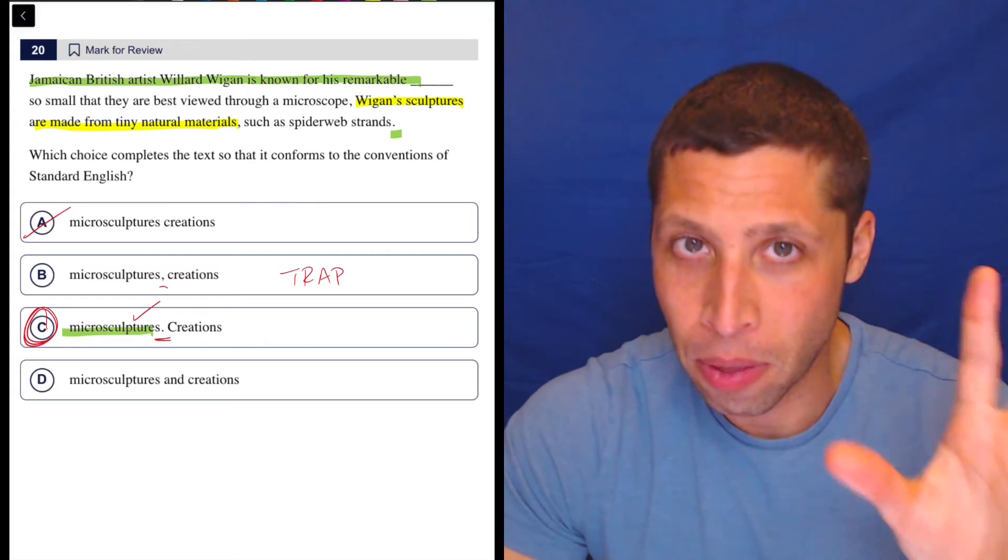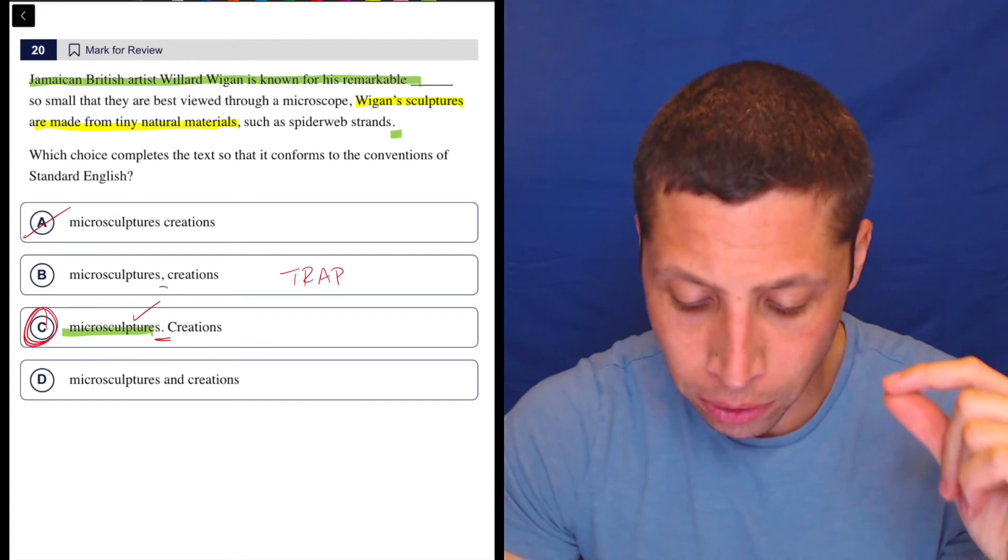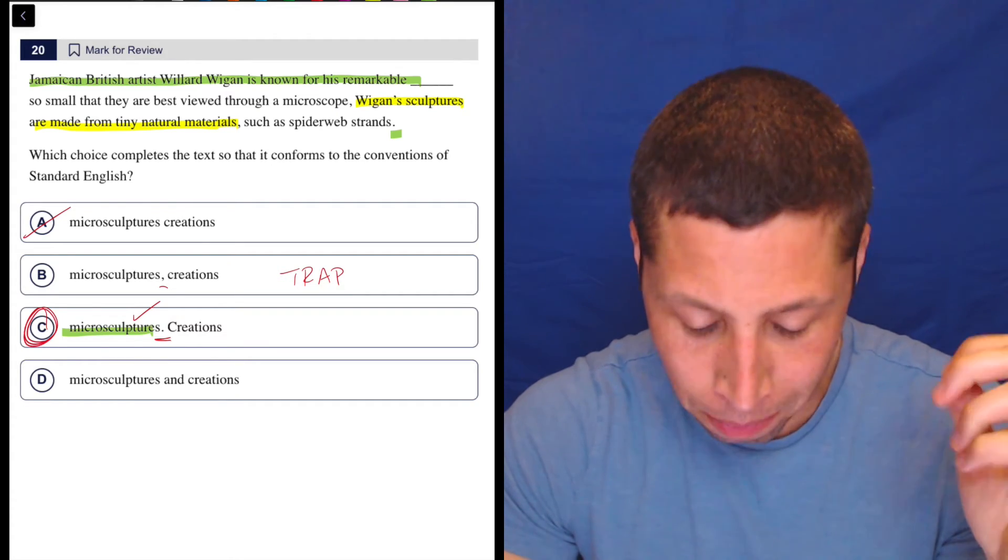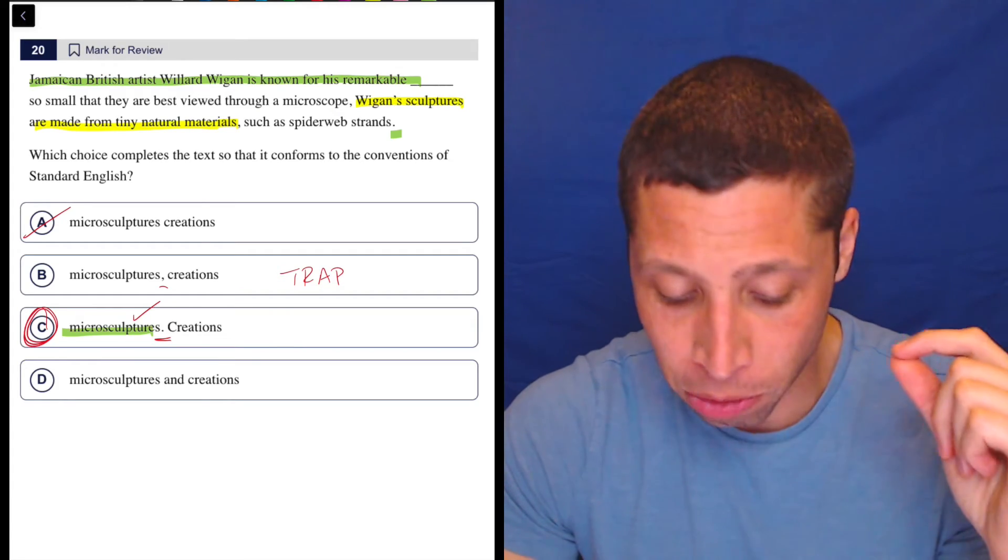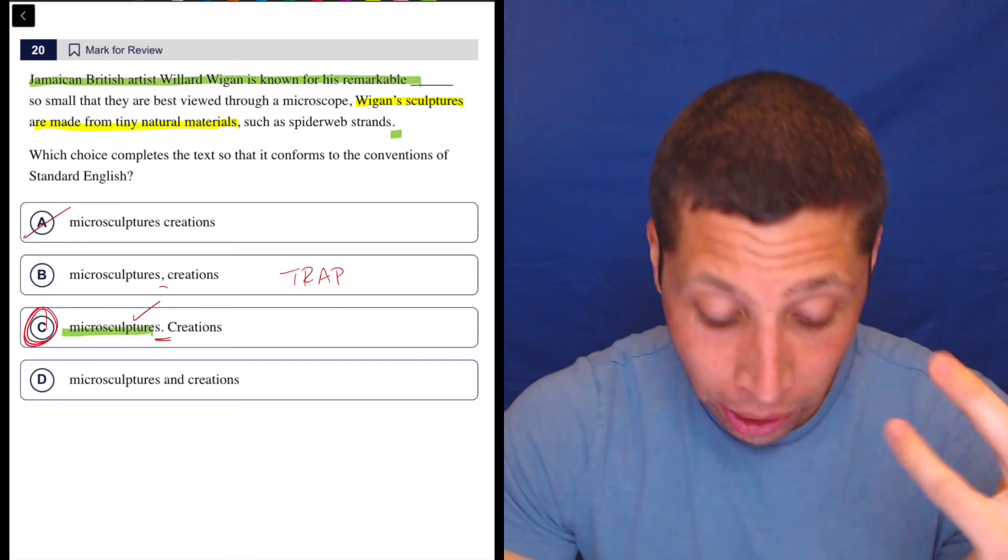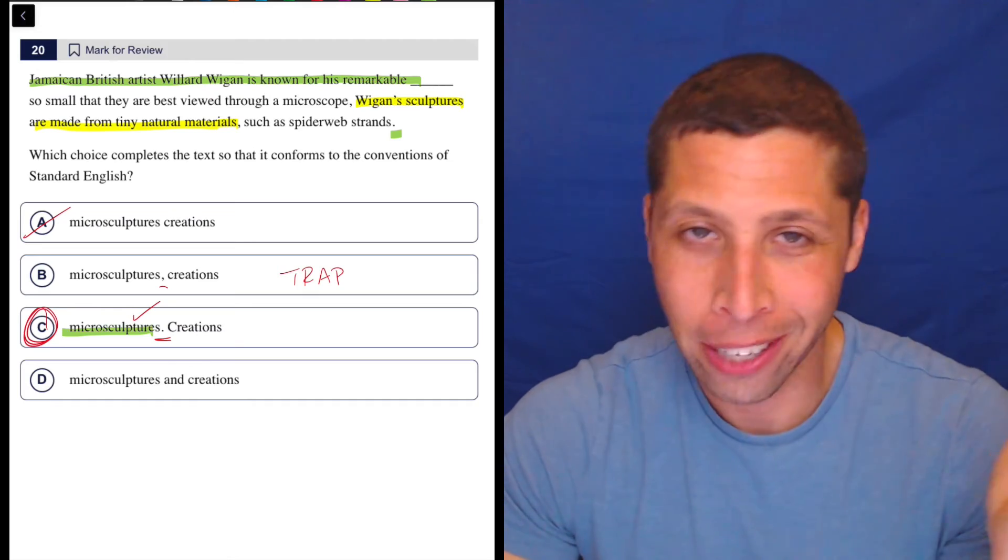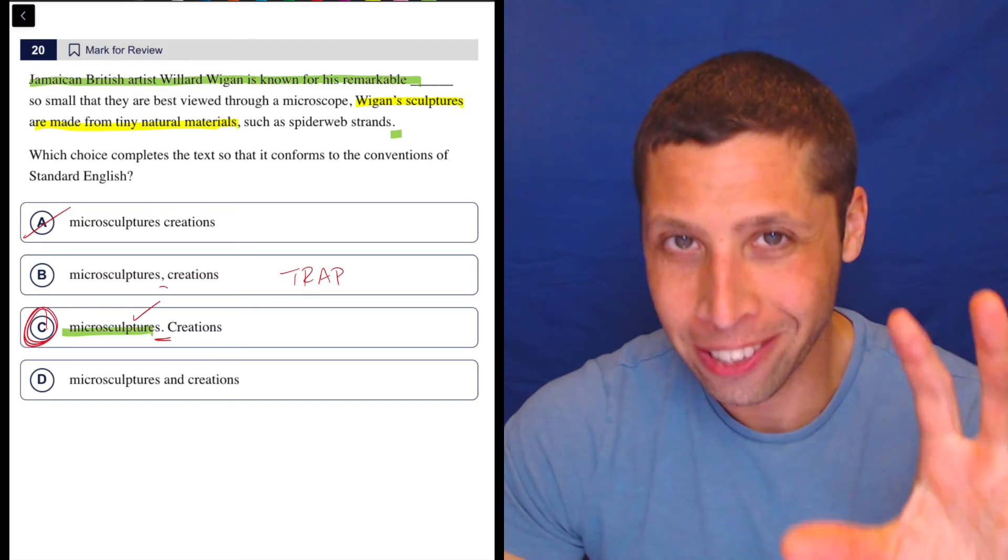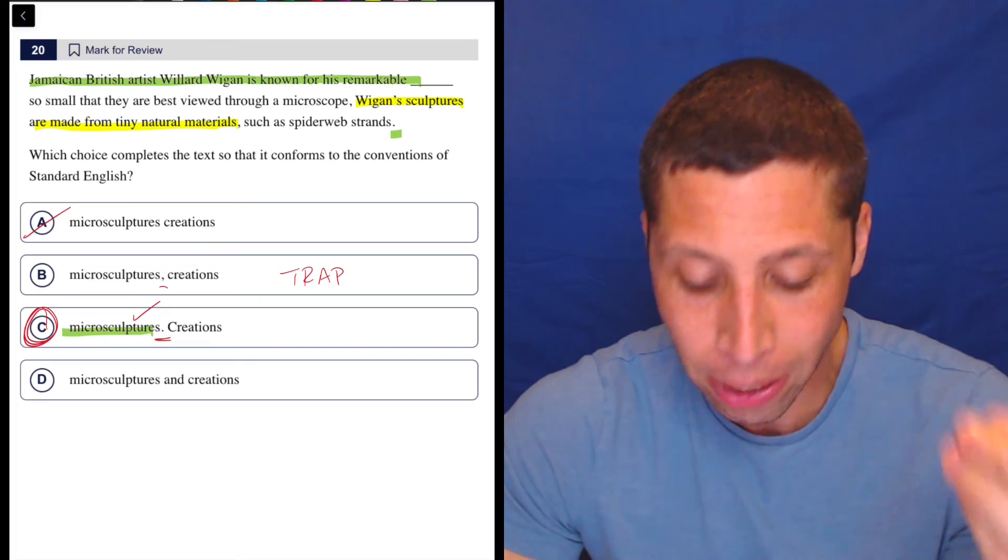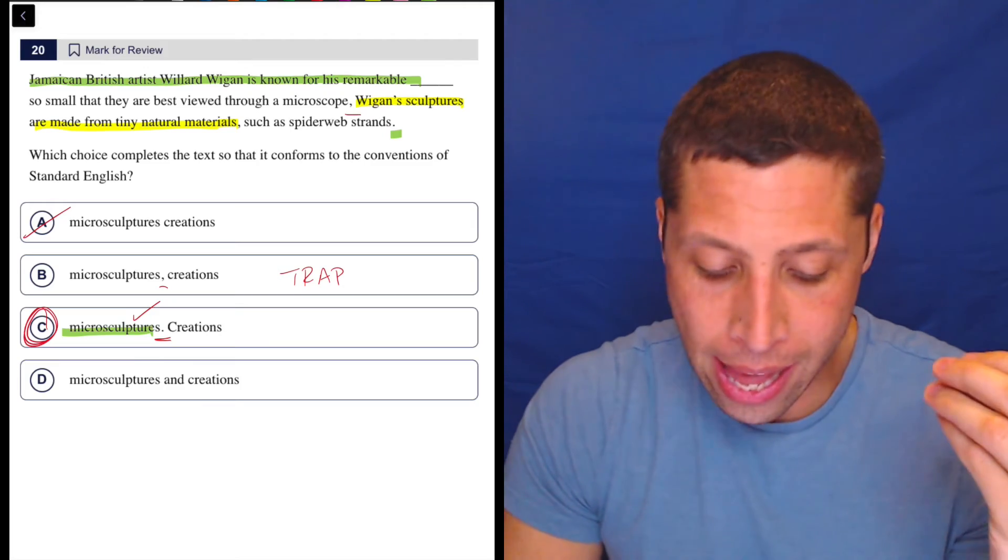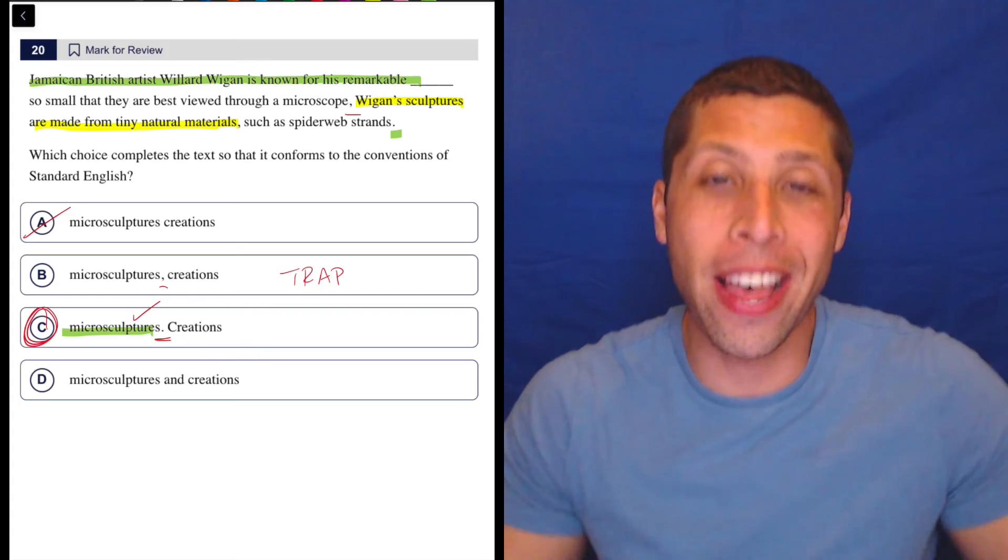You might have written it like this. I'm going to emphasize the pauses for effect here. Jamaican British artist Willard Wiggin is known for his remarkable micro sculptures, creations so small that they are best viewed through a microscope. Wiggin sculptures are made from tiny natural materials such as spiderweb strands. So I know I stumbled, but I hope you heard the parts where we could have made the period. We could have put the period after microscope right here and then just put that clause with the first sentence. It's not wrong to do that. But we don't have that choice. We don't have that option.